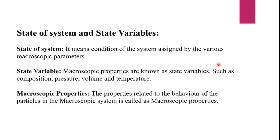The next term is state of a system and state variables. The state of a system is the condition of the system assigned by various microscopic parameters. State variables are microscopic properties such as composition, pressure, volume, and temperature. The properties related to the behavior of particles in a microscopic system are called microscopic properties.